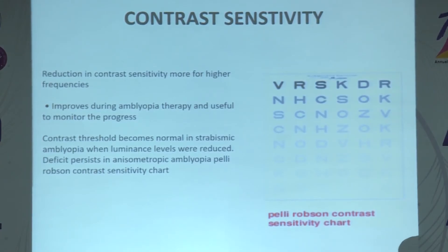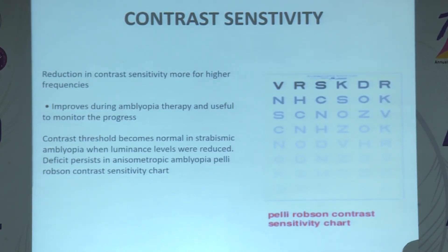Contrast threshold becomes normal in strabismic amblyopia when luminance levels are reduced, but the deficit persists in anisometropic amblyopia. Pelli-Robson contrast sensitivity charts can be used as shown.